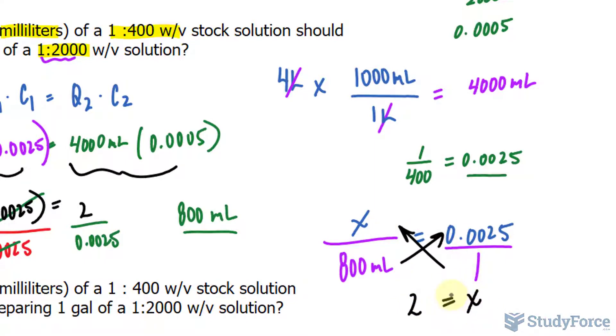Now since our stock solution is weight per volume, this too represents a mass, so its units have to be in grams. We're not told specifically whether it's in grams or another equivalent mass unit, but we're going to assume that when we're talking about weight per volume, that this too is in grams. So there were 2 grams of active ingredient in the stock solution.